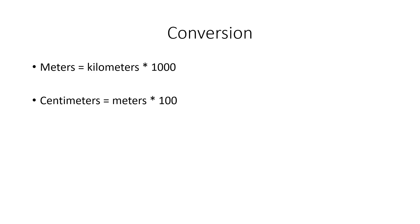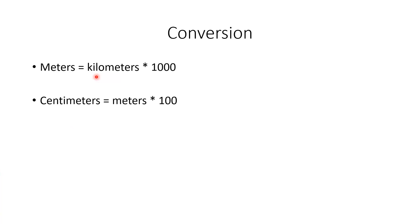The conversion formula from kilometers to meters and centimeters: we all know that one kilometer is equal to one thousand meters. To get meters from kilometers, we multiply the input kilometers by one thousand. For example, if the input is two kilometers, two times one thousand gives two thousand meters.